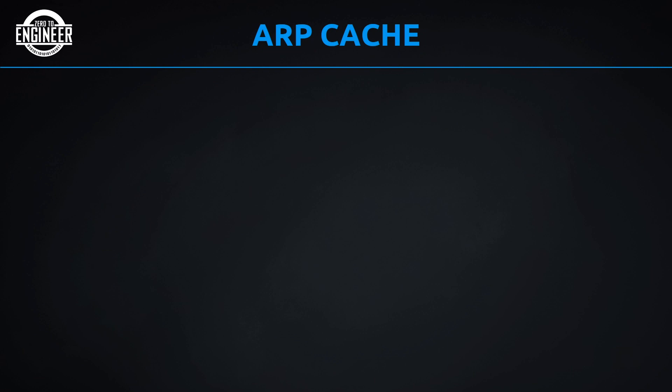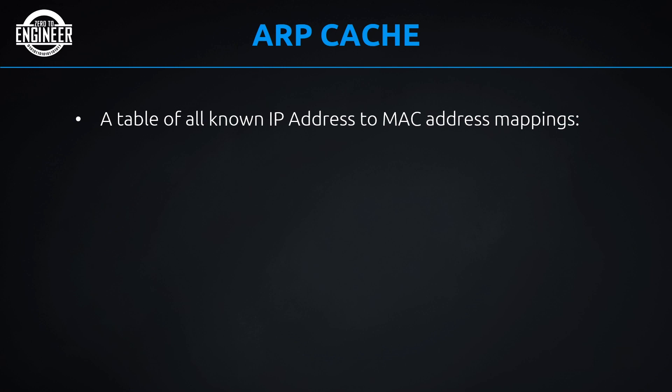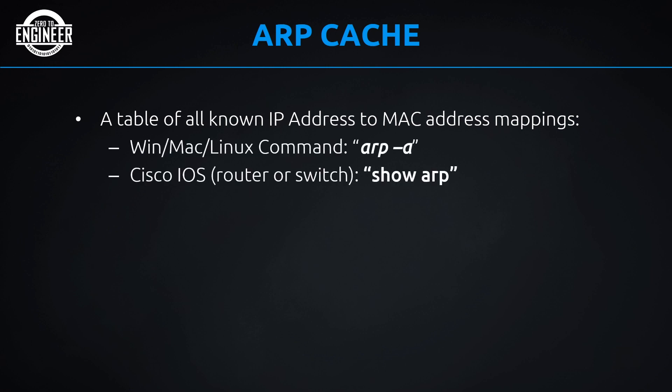So what is the ARP cache? The ARP cache is a temporary table — that's why it's called a cache, because items can be removed over time. It's a temporary table of all known IP address to MAC address mappings. On Windows, Mac, or Linux, the command to view the ARP table is 'arp -a'. On a Cisco router or switch, it's 'show arp' from privilege exec mode, or 'do show arp' from global config.